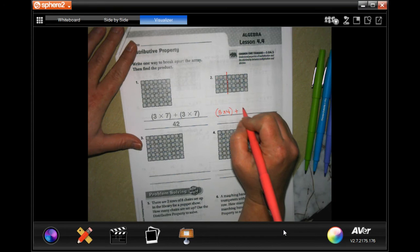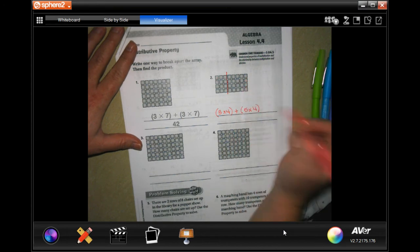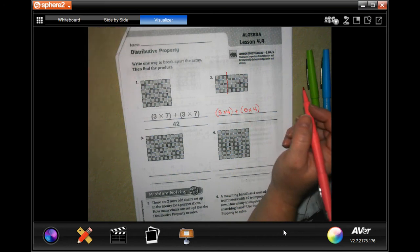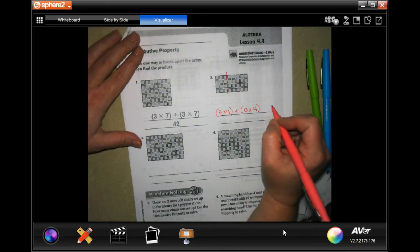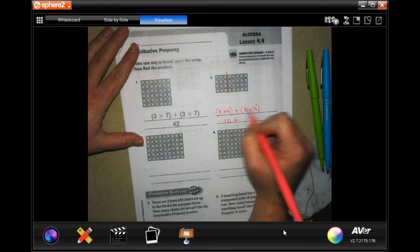By one, two, three, four. So that's all we're doing guys, super easy. Which means three times four is 12, plus five times four is 20.